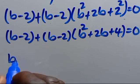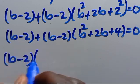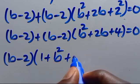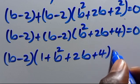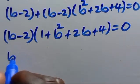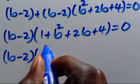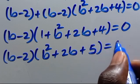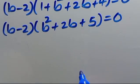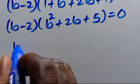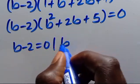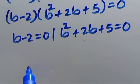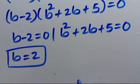B minus 2 is a common factor. Dividing through, B minus 2 times the quantity B squared plus 2B plus 4 plus 1 equals zero, giving us B minus 2 times B squared plus 2B plus 5 equals zero. So from here, either B minus 2 equals zero, or B squared plus 2B plus 5 equals zero. From the first factor, B equals 2.